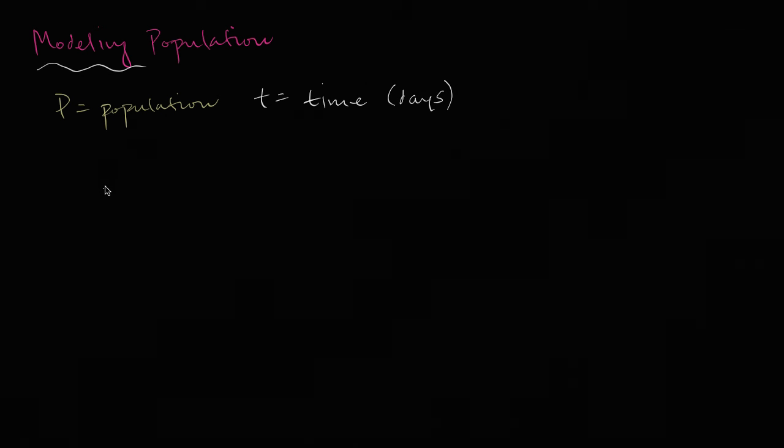Well, we could say that the rate of change of our population with respect to time is going to be proportional to the actual population. Why is that reasonable? Well, the larger the population, the larger the rate at any given time. If you have 1,000 people, the rate at which they're reproducing is going to be more, or 1,000 insects, is going to be more insects per second or per day or per year than if you only have 10 insects.